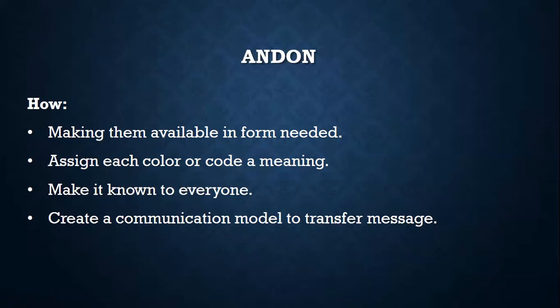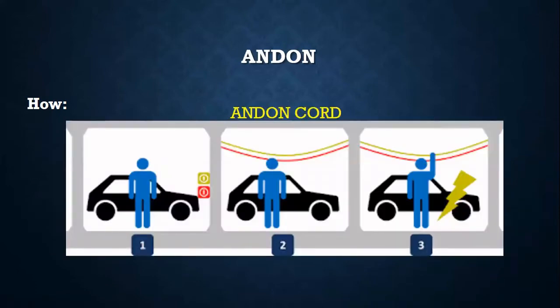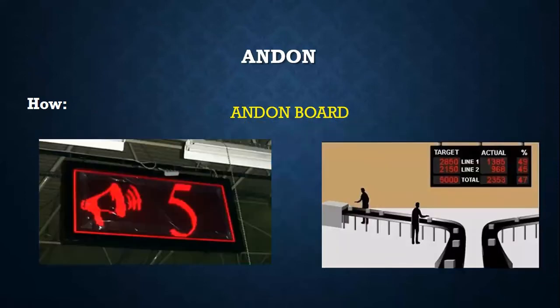Different manners by which organizations adopt Andon are: first is the Andon cord, generally used in factories having very long lines like two-wheeler or four-wheeler manufacturing assembly lines. Andon cords are used where operations are performed manually and an operator wants to bring any issue to attention. The Andon cord moves parallel to the line in its full length with various colors, each having its own meaning, like yellow for maintenance issue and red for quality issue. The operator needs to pull the cord in case of abnormality observation and the correct person gets notified.